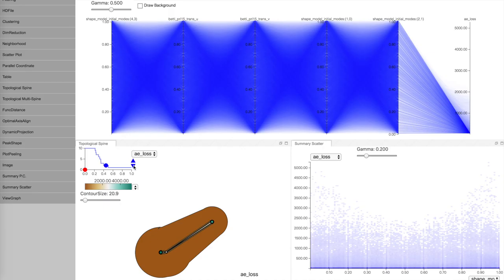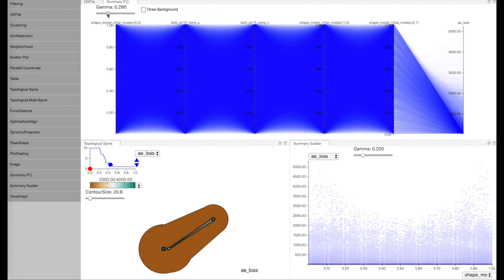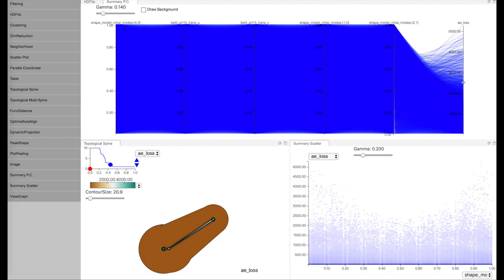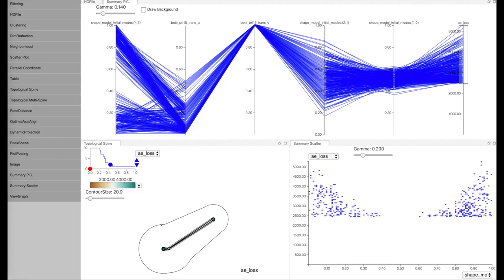In the scatterplot and parallel coordinate view, due to the high number of samples and uneven distribution of data, density differences can make it hard to see less frequent samples. To address this problem, we employ gamma correction for the density value, which helps reveal the less frequent samples. The parallel coordinate also supports standard features such as axis brushing and order adjustment.